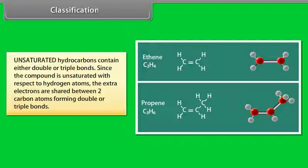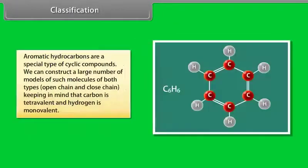Aromatic hydrocarbons are a special type of cyclic compounds. We can construct a large number of models of such molecules of both types, open chain and closed chain, keeping in mind that carbon is tetravalent and hydrogen is monovalent.